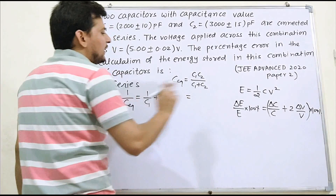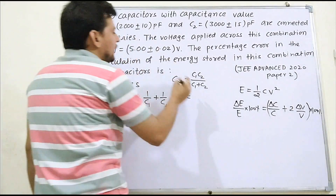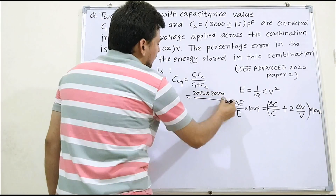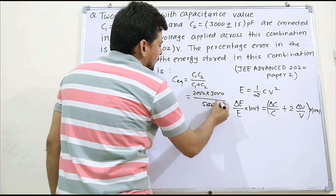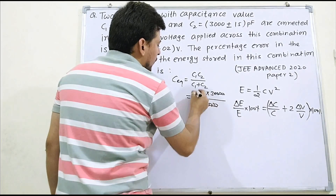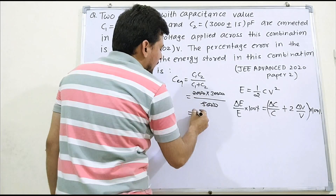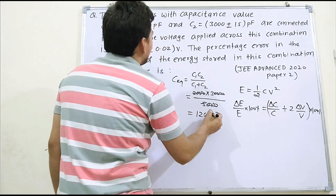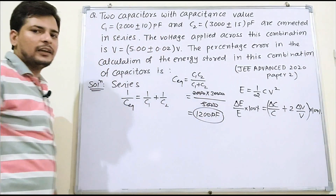From here, C_equivalent is calculated. It comes out to: 2000 × 3000, divided by 2000 + 3000 = 5000. Simplifying: 3 cancels, and dividing by 5 gives 400, so 400 × 3 = 1200. So your C_equivalent is 1200 pico-farads.